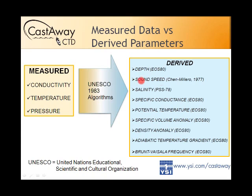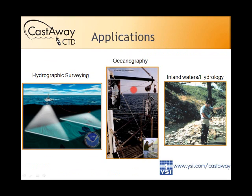We get a lot of questions about the sound speed algorithm — we use the Chen-Millero formula, the most commonly accepted one. Salinity is a derived parameter from the conductivity measurement, as is depth. We record the raw data; these are derived parameters output through the software, but users can clearly output data in raw form and run their own calculations if they prefer a different sound speed equation.